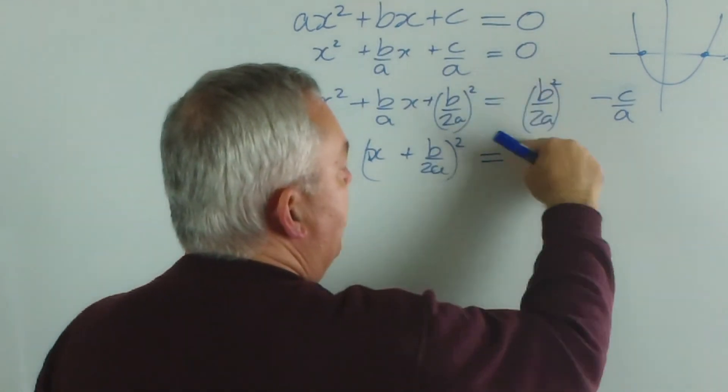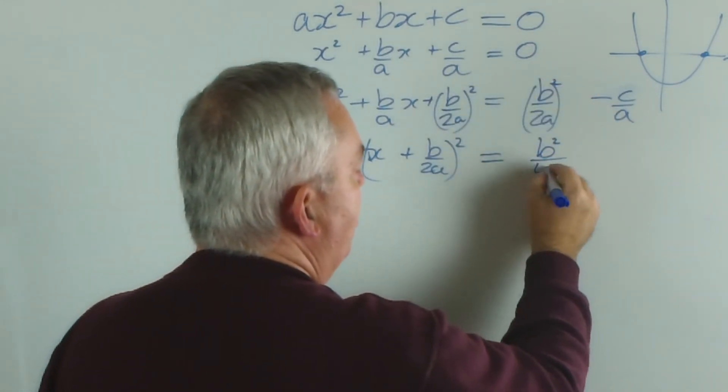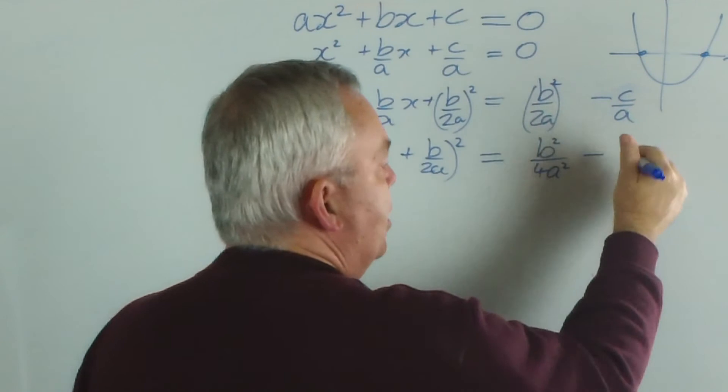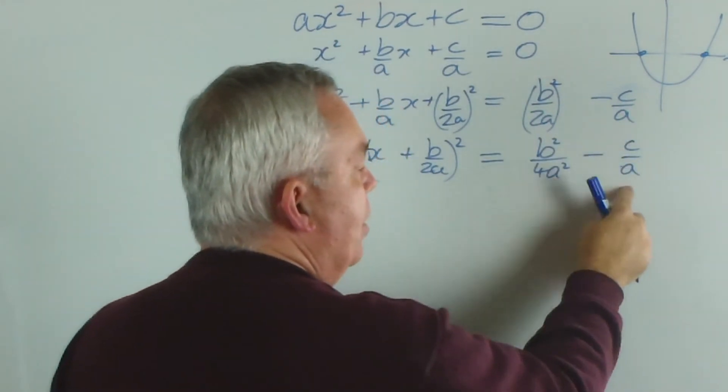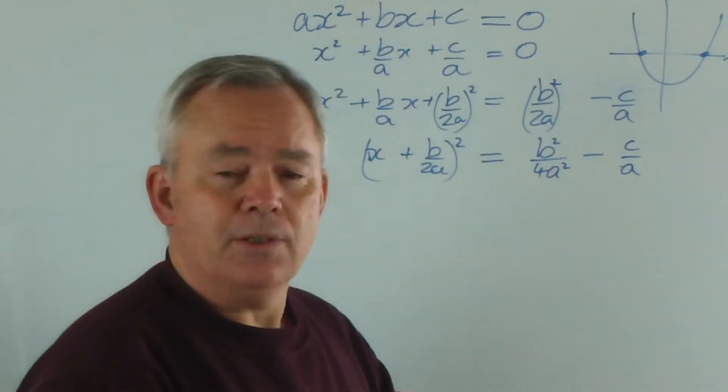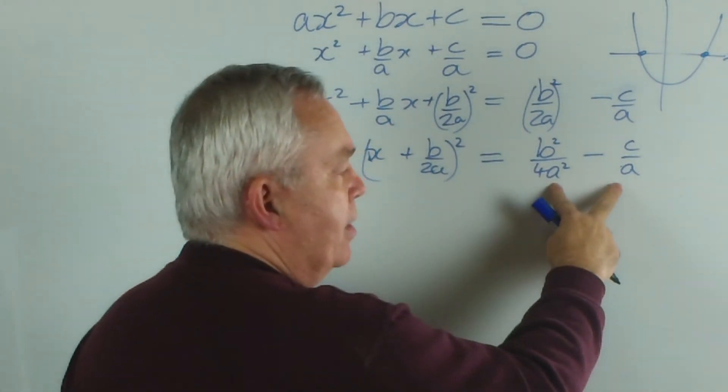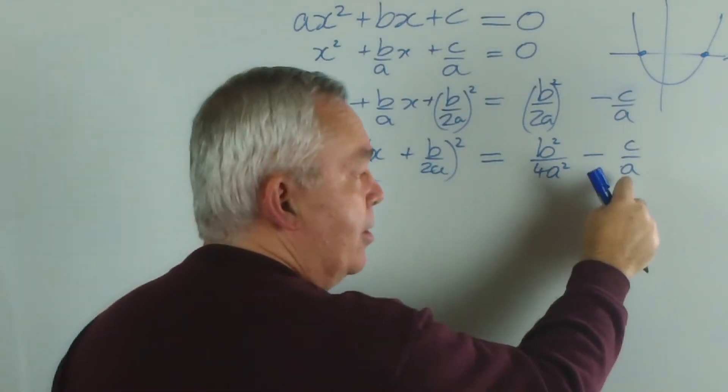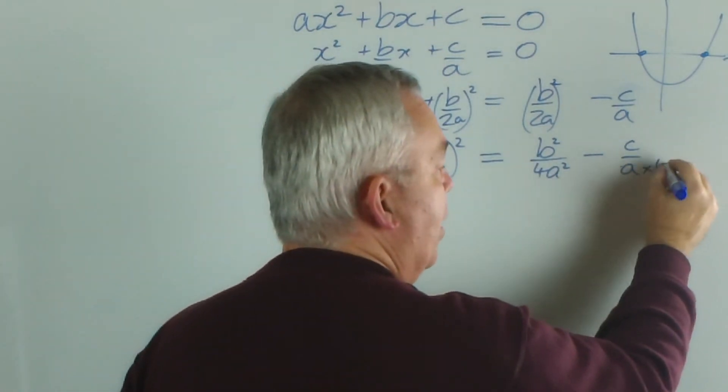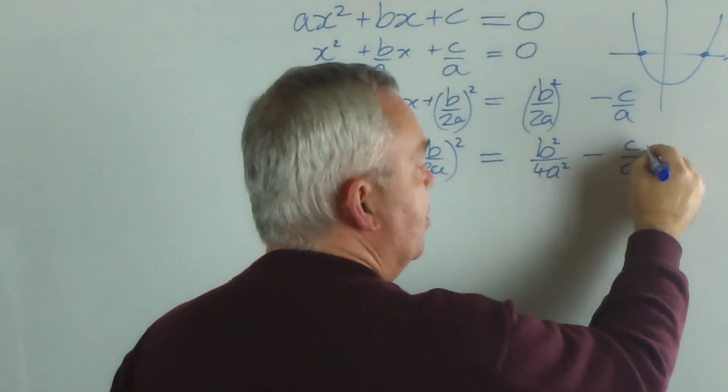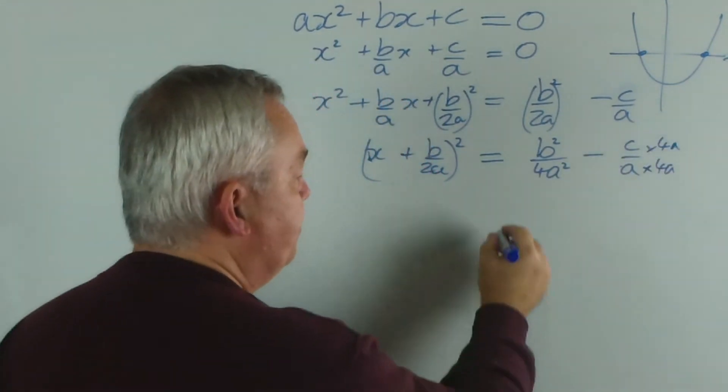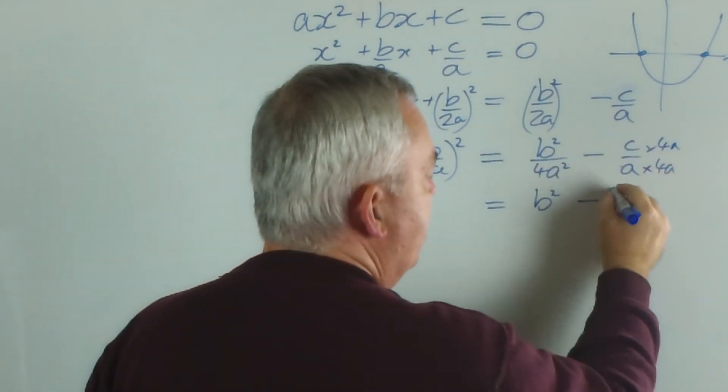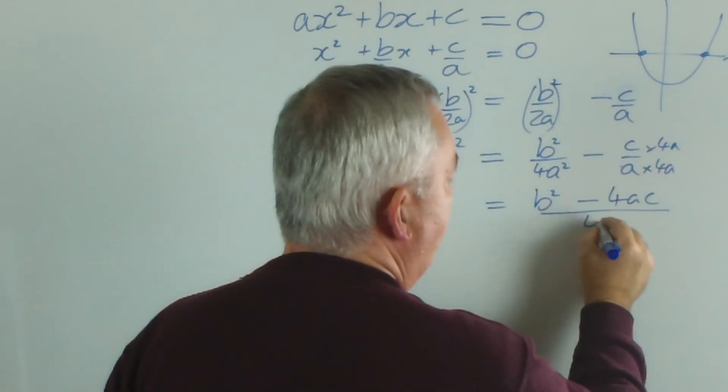On this side, if I expand this, I have b-squared on 4a-squared. This term, c on a, if I wish to add to this to make it into one complete fraction, I must make the denominators the same. We cannot add or subtract fractions unless the denominators match. So to make this match that, I have to multiply it by 4a to get 4a-squared, which means I have to multiply the top by 4a as well. And that gives me b-squared minus 4ac all over 4a-squared.